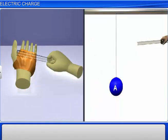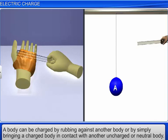These experiments prove that a body can be charged by rubbing against another body or by simply bringing a charged body in contact with another uncharged or neutral body.